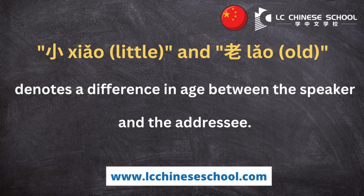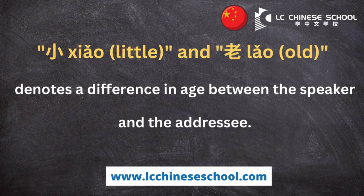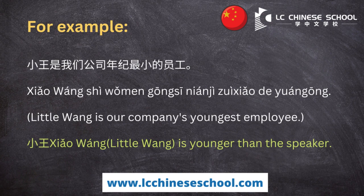In everyday speech, the words 小 (xiǎo), meaning 'little', and 老 (lǎo), meaning 'old', denote a difference in age between the speaker and the addressee. For example, 小王是我们公司年纪最小的员工 — Little Wang is our company's youngest employee.